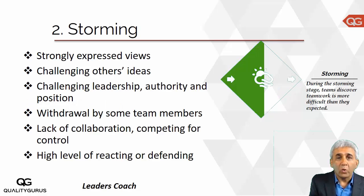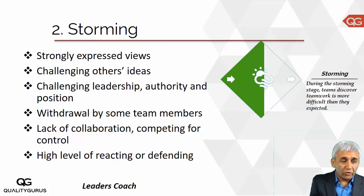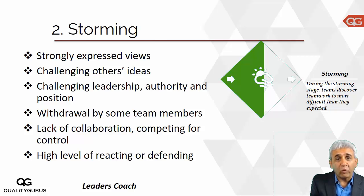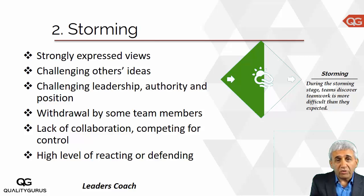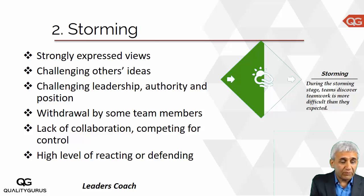The next stage is storming. Storming is the time when people start expressing their views; each one has a strong position towards the goal and they challenge each other's ideas, wanting to dominate the group. The team will even challenge the leadership position or authorities. Some team members might withdraw because they don't agree with others. There is a lack of collaboration and competition for taking control. As a team leader, your role at this time is to coach and help people move towards the goal.